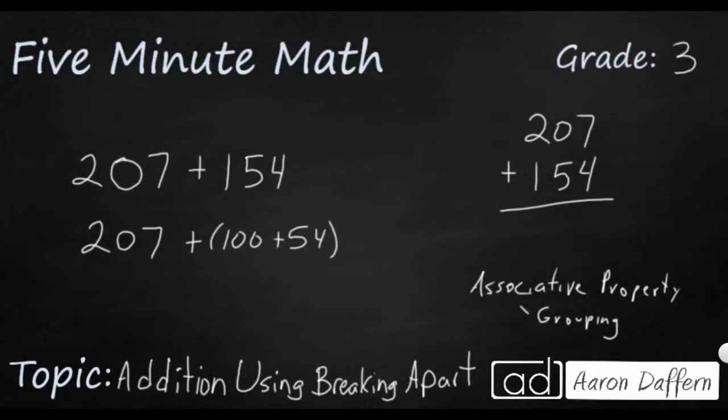Instead of the 100 plus 50 plus 4, I'm just going to keep my 54 together because I already know that 54 plus 7 is going to be pretty easy. So really I'm just going to add it into two chunks. I'm going to take my 207 and I'm going to add that to the 100 first. So that's an easy 307. And 54 plus 7 is something that I can do in my head because I know that 54 plus 7 is going to be 61. So 307 plus 54 is going to be 361.